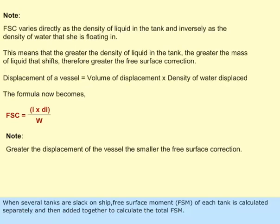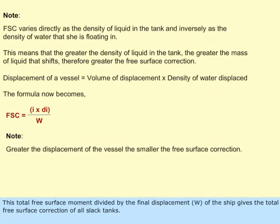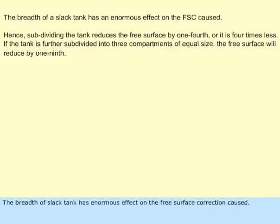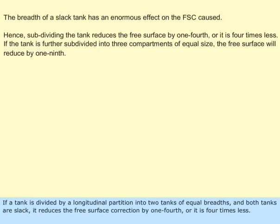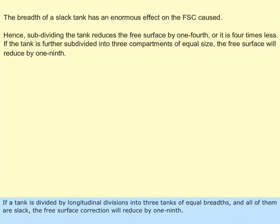When several tanks are slack on a ship, the free surface moment (FSM) of each tank is calculated separately and then added together to calculate the total FSM. This total FSM divided by the final displacement W gives the total free surface correction of all slack tanks. The breadth of a slack tank has an enormous effect on the free surface correction. If a tank is divided by a longitudinal partition into two tanks of equal breadths and both are slack, it reduces the free surface correction by one-fourth. If divided into three tanks of equal breadths and all are slack, the free surface correction reduces by one-ninth.